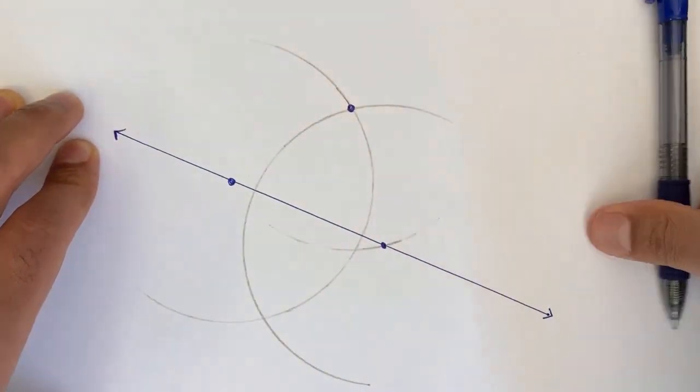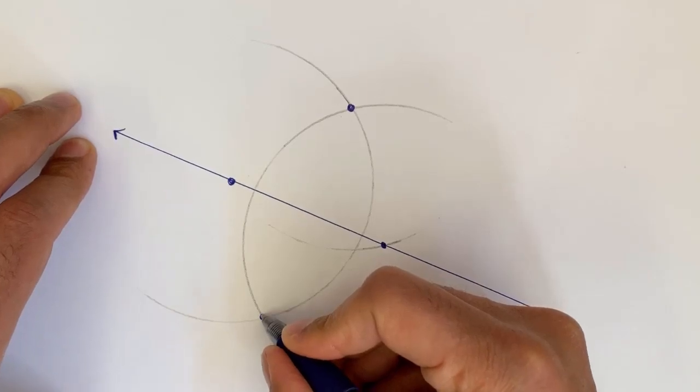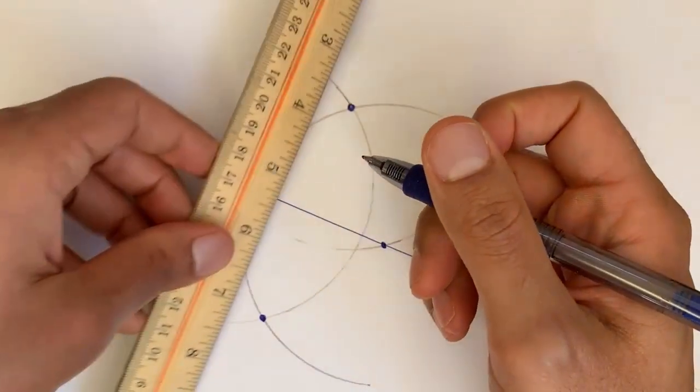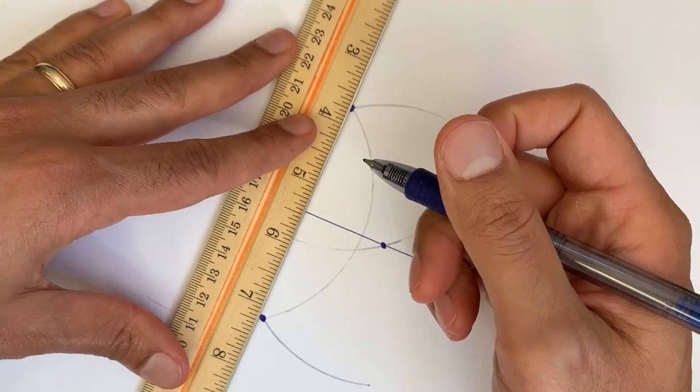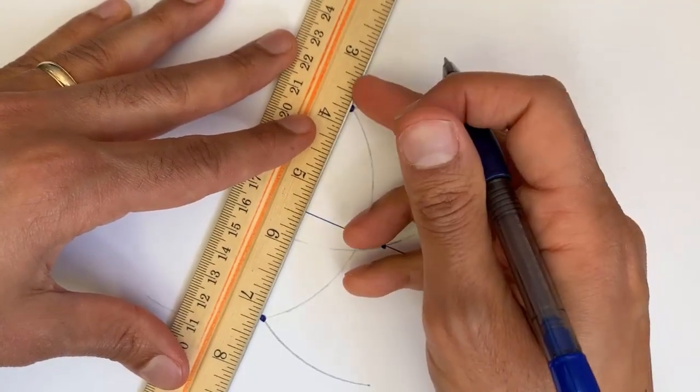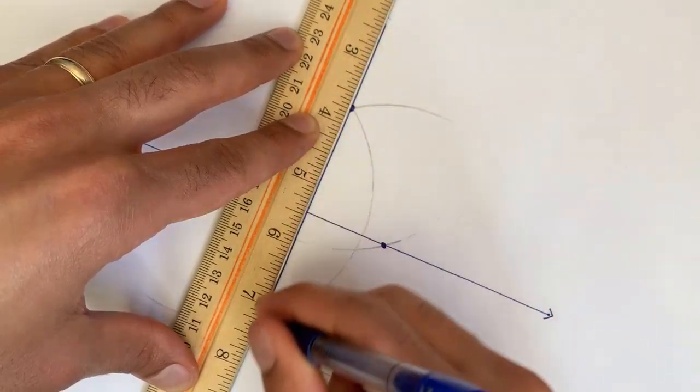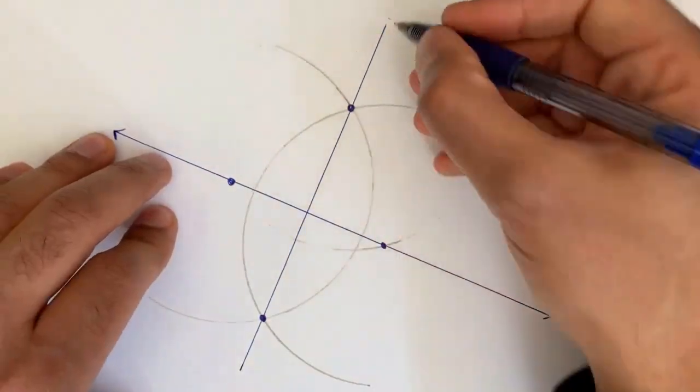And then what I can do is connect this point and that point. And it at least looks perpendicular, but we're going to prove to ourselves that it is indeed perpendicular to our original line. So let me just draw it so you have that like that.